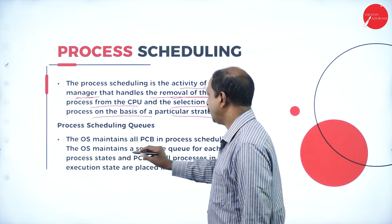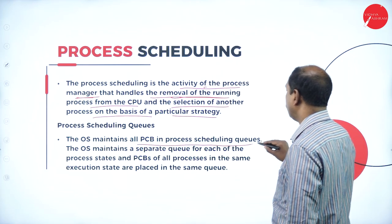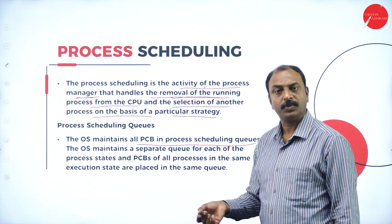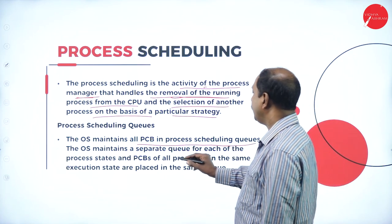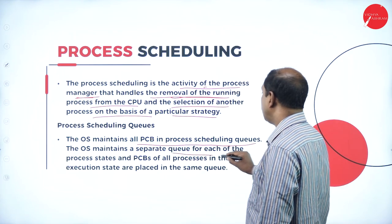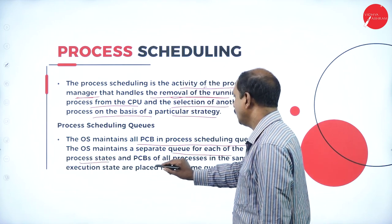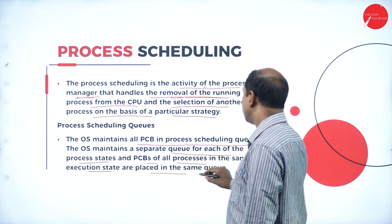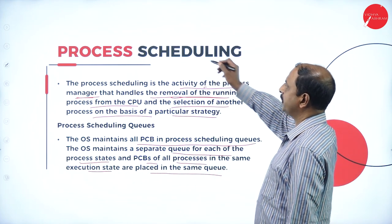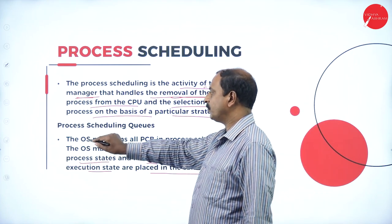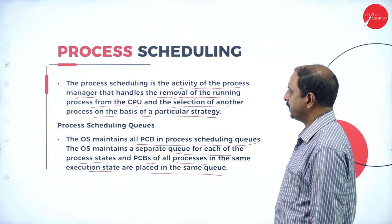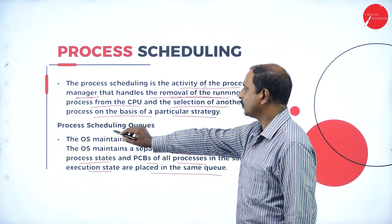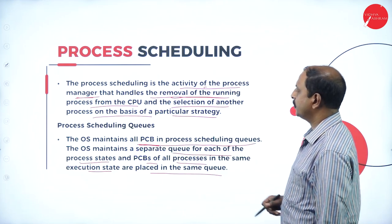The OS maintains all PCBs in process scheduling queues. If there are more than one process, they will be in a queue. It maintains a separate queue for each of the process states, and PCBs of all processes in the same execution state are placed in the same queue. The responsibility of the operating system is to maintain all the PCBs in the process scheduling queue.